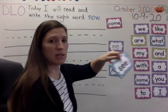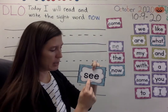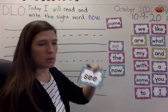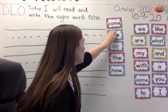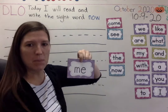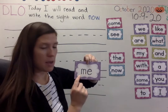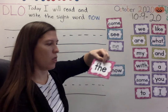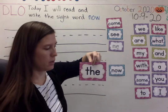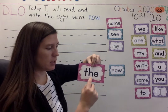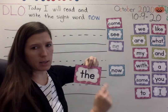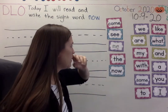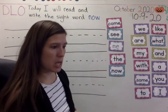We're going to use 'see' — S-E-E, S-E-E — I can read 'see.' Me — M-E, me. The — T-H-E, T-H-E, that's how to spell 'the,' you see. Now we'll review the other ones at the end.